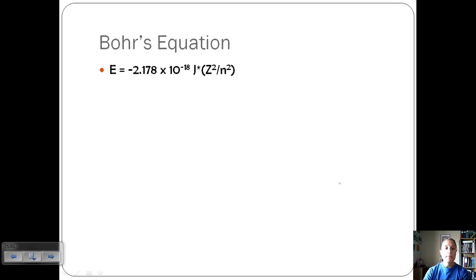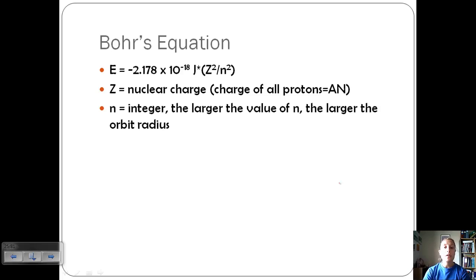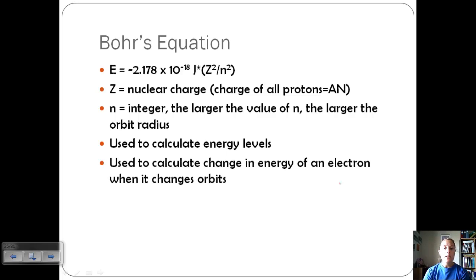Let's look at Bohr's equation. From all of these conclusions he came up with this equation that says the energy is equal to negative 2.178 times 10 to the negative 18 joules times z squared over n squared. z represents the nuclear charge. This is the charge of all the protons in an atom and it's equal to the atomic number. n represents an integer. So the larger the value of n, the larger the orbit radius. The larger the value of n, the further away from the nucleus the electron is getting. We can use this equation to calculate energy levels. It's used to calculate the change in energy of an electron when it changes orbits.